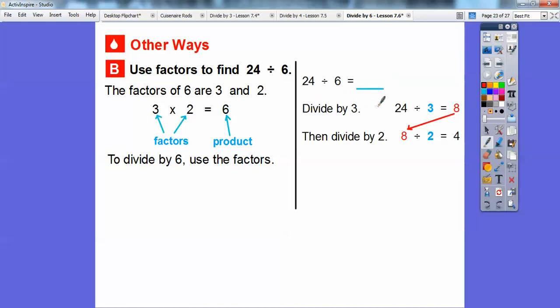First divide by the first factor, 3: 24 divided by 3 equals 8. Then take that 8 and divide it by the second factor, 2: 8 divided by 2 equals 4. So 24 divided by 6 is the same as 24 divided by 3, then that result divided by 2. The answer is 4.